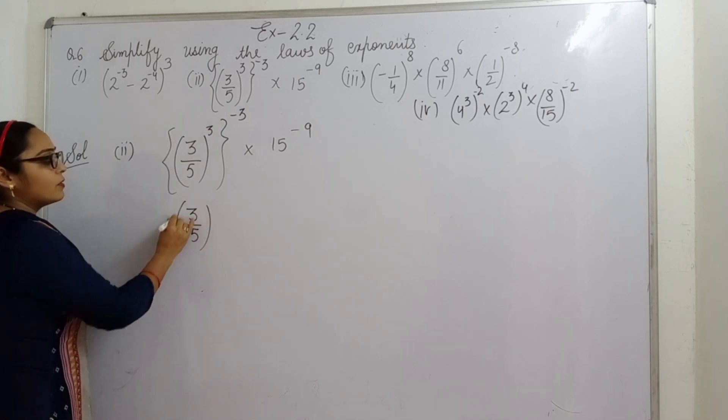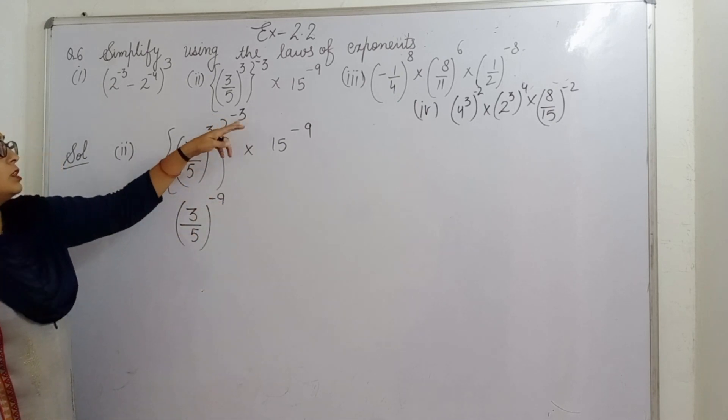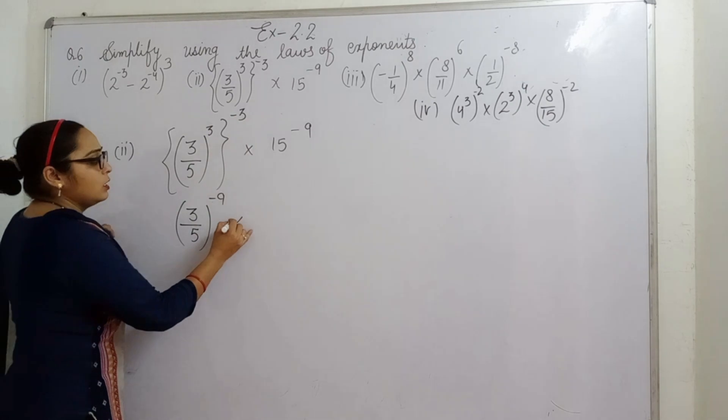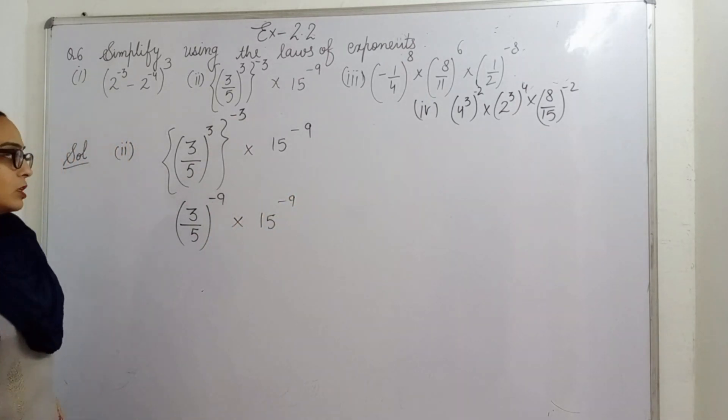3 by 5 power raised to power. Power ki multiply karna hai, 3 times 3 is 9 and sign will remain minus, and 15 raised to power minus 9.